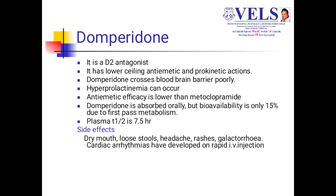Domperidone does not cross the blood-brain barrier. Its anti-emetic efficacy is lower than metoclopramide. The plasma half-life is 7.5 hours. Side effects include dry mouth, loose stools, headache, rashes, galactorrhea, and cardiac arrhythmias on rapid IV injection.